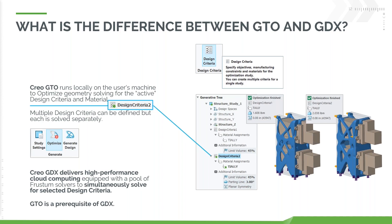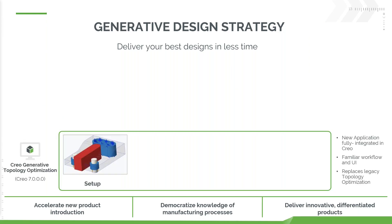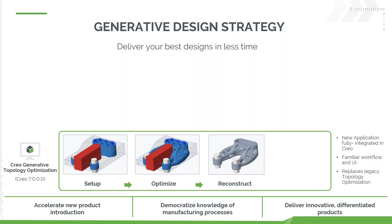There's a strategy that lets you choose how you want to work. Customers who just want to start on the desktop can do all their setup inside Creo, run the optimization using the active set of criteria, build the model from that result, continue their design, and perform further verification, validation, and simulation. That's a perfectly legitimate way of working.